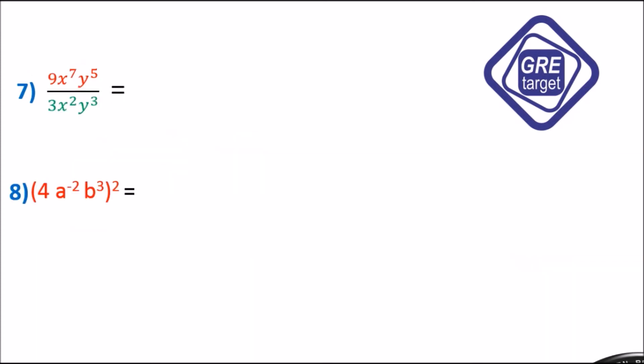Example 7: 9x raised to 7 times y raised to 5 divided by 3 times x squared times y cubed. We cancel the common numerical factor: 9 divided by 3 gives 3. Applying the quotient rule for x: 7 minus 2 equals 5. Applying the quotient rule for y: 5 minus 3 equals 2. So the answer is 3 times x raised to 5 times y squared.